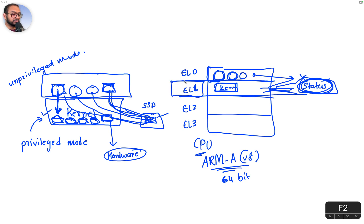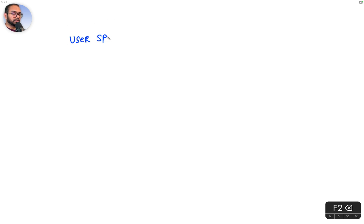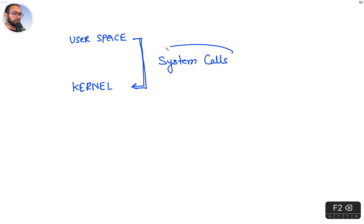You can imagine the kernel is running in EL1 and user code is running in EL0. Any access to hardware that needs to be done requires control to be passed from user space down to kernel space.